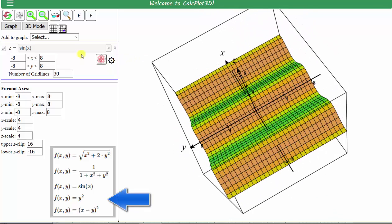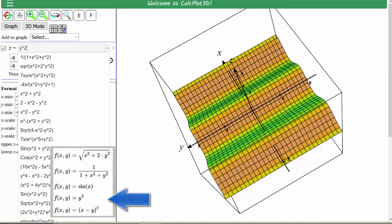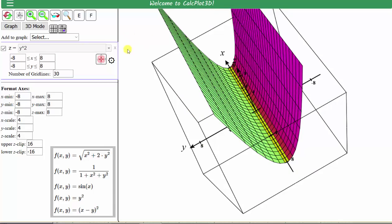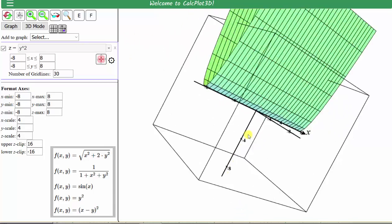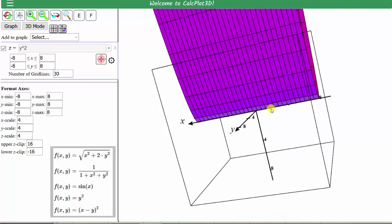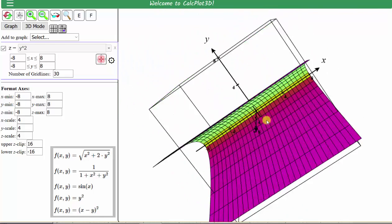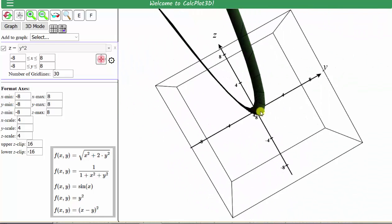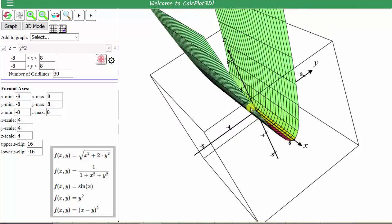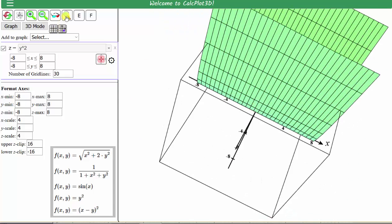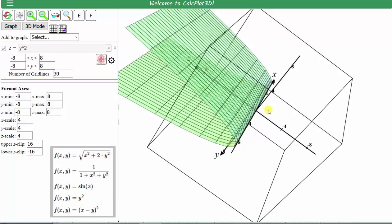Our fourth function is f of x comma y equals y squared. We clear sin x and enter y squared. Hopefully you recognize some of the names of these surfaces. Remember, if we want to have a transparent surface, we click the magnifying glass and it makes the surface transparent.